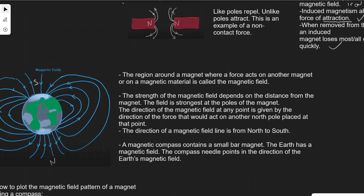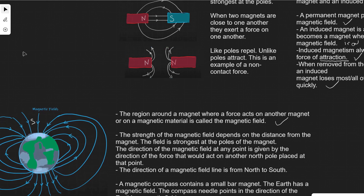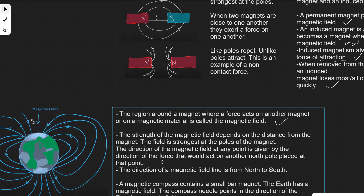The region around the magnet where a force acts on another magnet is called the magnetic field — that's our definition. The strength depends on the distance from the magnet: if we're right next to it the force will be quite strong, but if we're far away it will not be as strong. The direction at any point is given by the direction of the force that would act on another north pole placed at that point.